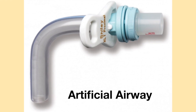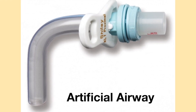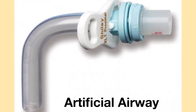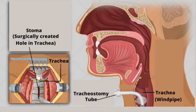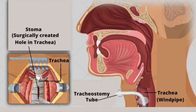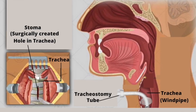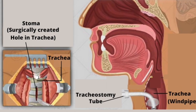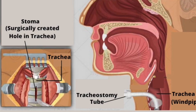A tracheostomy tube is a medical device which acts as an artificial airway. It is inserted directly into the trachea through a surgically created hole called a stoma.